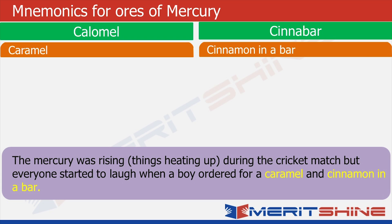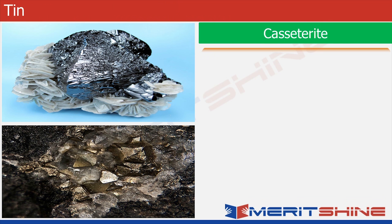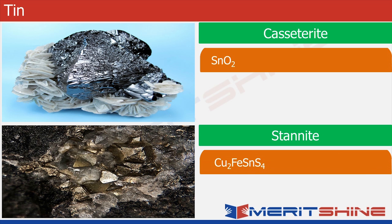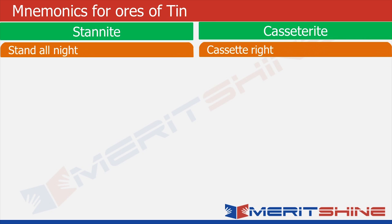With this we can move to tin. Cassiterite is an oxide and stannite is a sulphide with some iron and copper. We have filled our green boxes. Now it's time to fill our orange boxes. Stannite sounds like stand all night and cassiterite sounds like cassette right.